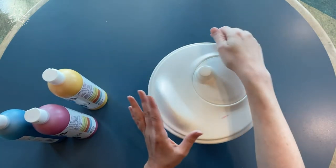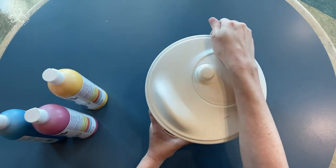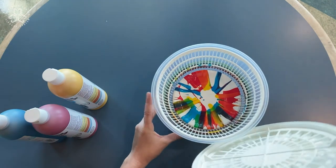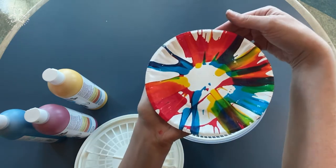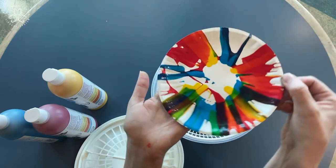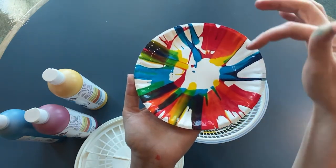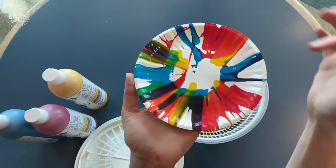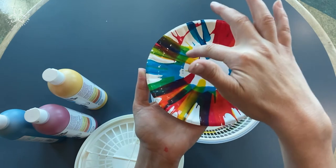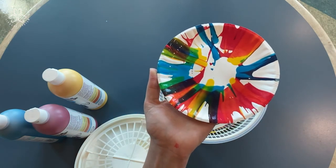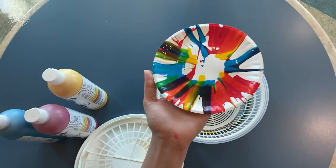Alright. Now let's take the top off and see how it looks. Oh, very nice. This is also a really great color mixing lesson because you can see how the red and the yellow mix together to make orange, the blue and the yellow mix together to make green, and the red and the blue mix together to make purple.